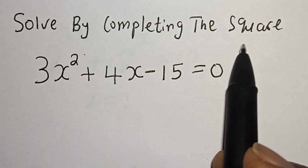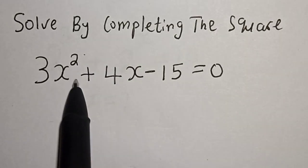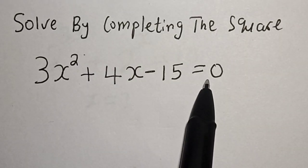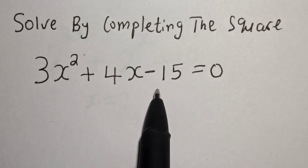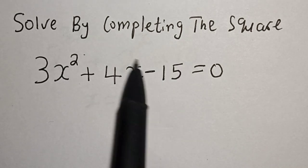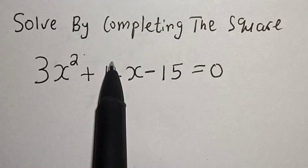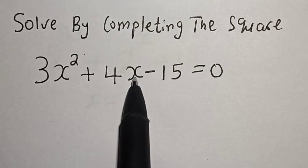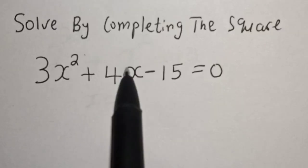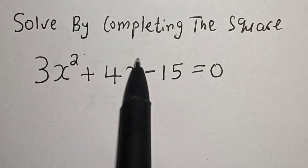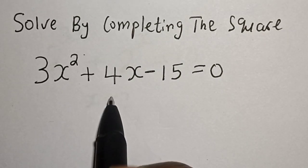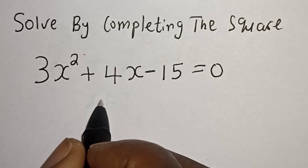Solve by completing the square: 3x² + 4x - 15 = 0. Hi everyone, welcome to my class. In this class we want to solve this quadratic equation by completing the square. Before we proceed, don't forget to like, share, comment and subscribe.